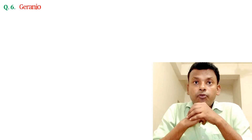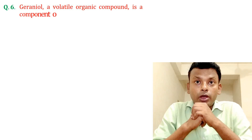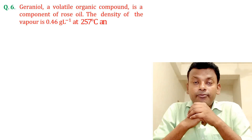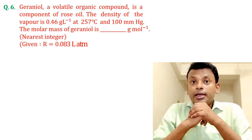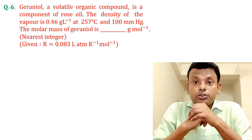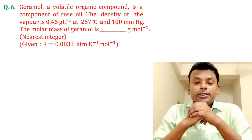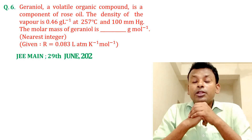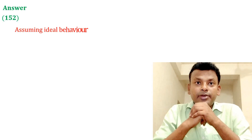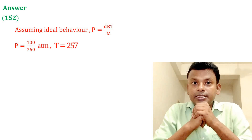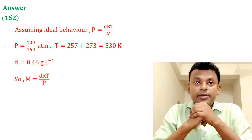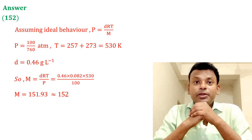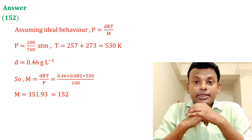Question 6. A volatile organic compound is a component of rose oil. The density of the vapor is 0.46 grams per liter at 250 degrees centigrade and 100 mmHg. The molar mass of Geraniol is dash grams per mole (nearest integer). Given R = 0.083 liter·atm per kelvin per mole. This question was set in JEMN 29th June 2022 morning shift. Answer is 152. Assuming ideal behavior, PV = dRT/M. P = 100/760 atm, T = 530 K, d = 0.46 g/L. Solving, M = dRT/P = 151.93, approximate value is 152.